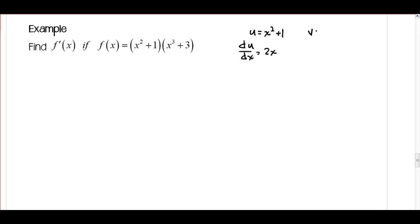And my function v is x cubed plus 3, so my dv/dx, my derivative of the function v, is going to be 3x squared. So now I've got all my pieces, so I know that f prime of x is going to be u times dv/dx plus v times du/dx.